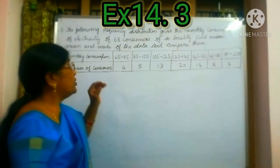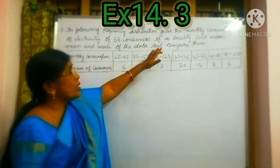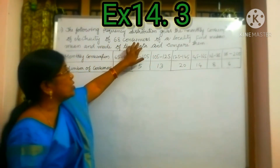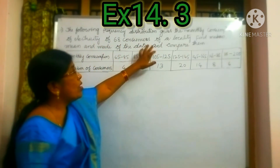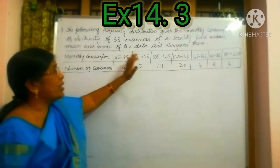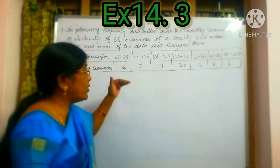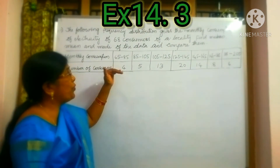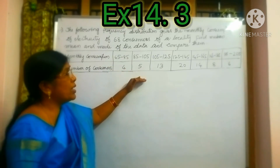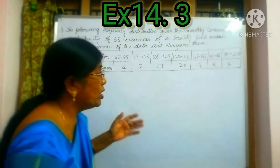Children, this is the data. The following frequency distribution gives the monthly consumption of electricity of 68 consumers of a locality. Find median, mean and mode of the data and compare them. We have to find mean, median and mode for this data and we have to compare them. Let us do the problem.